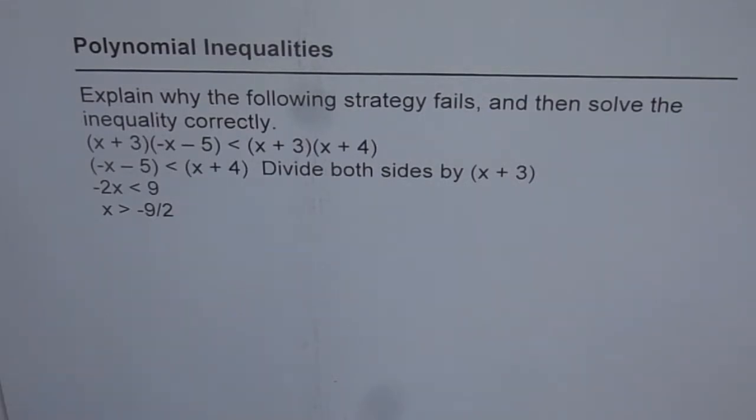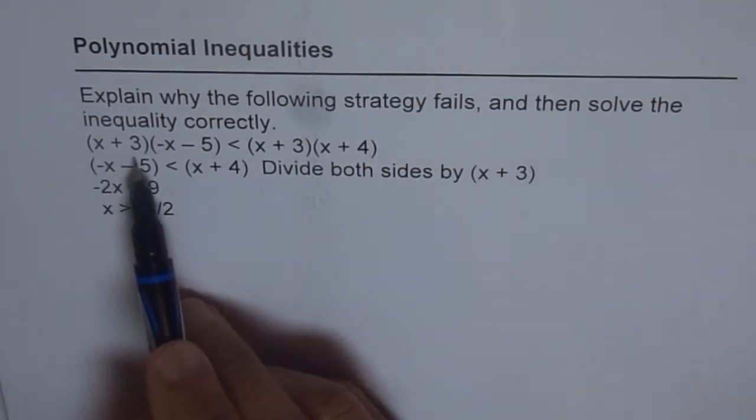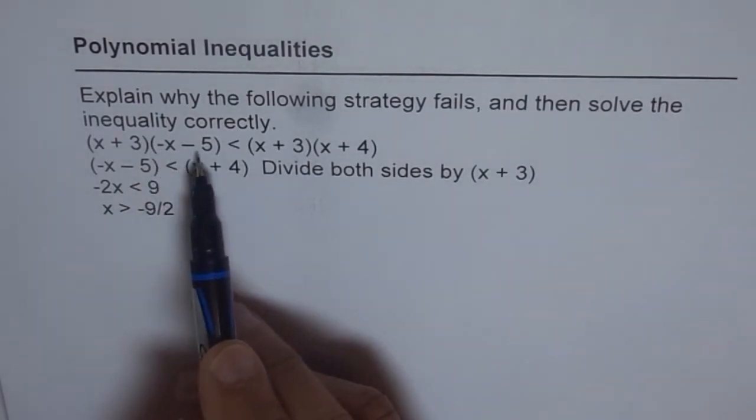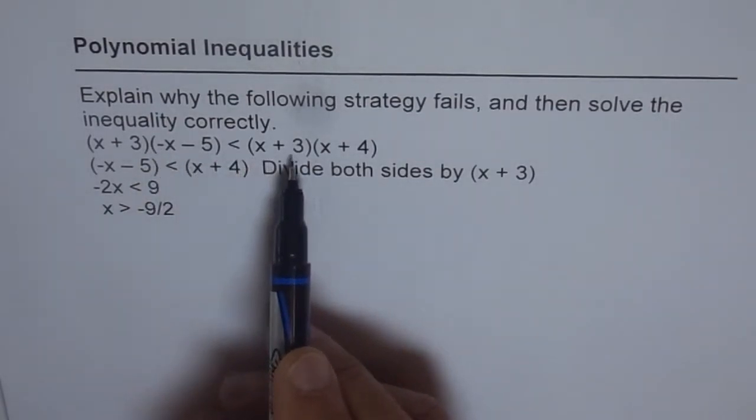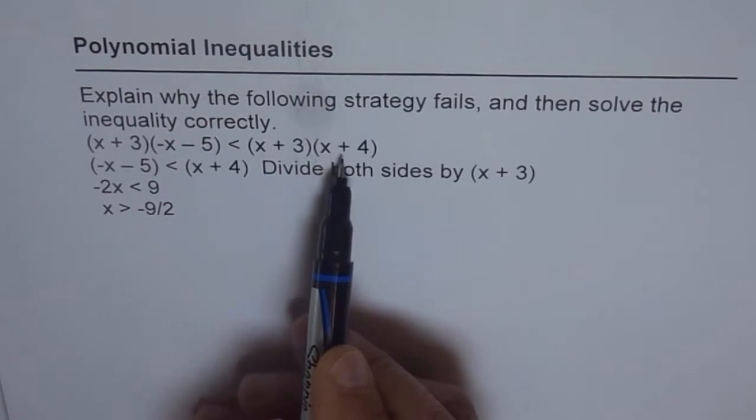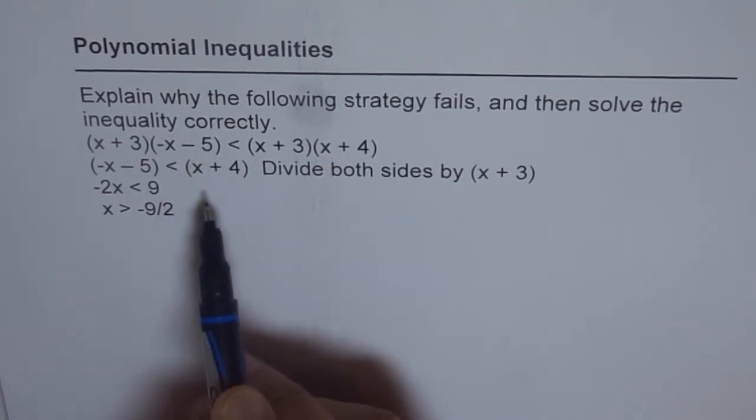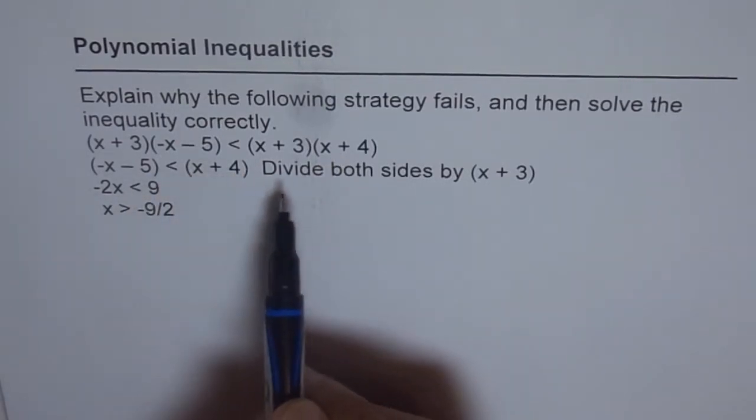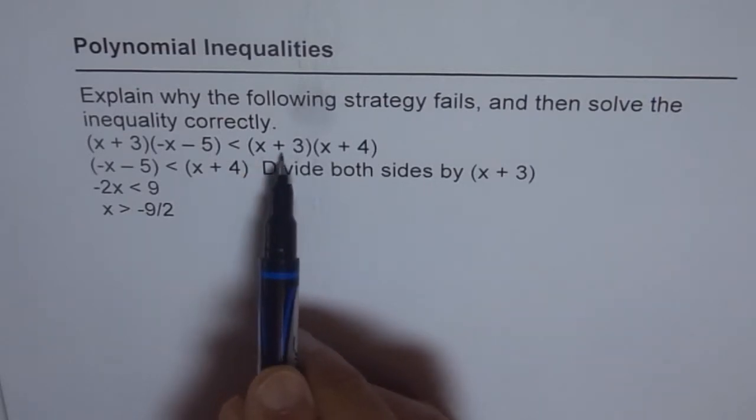The inequality is x plus 3 times minus x minus 5 is less than x plus 3 times x plus 4. Now to solve this inequality, the very first step is divide both sides by x plus 3.